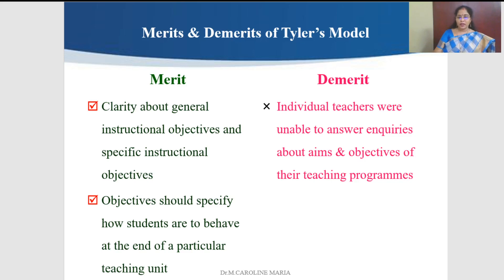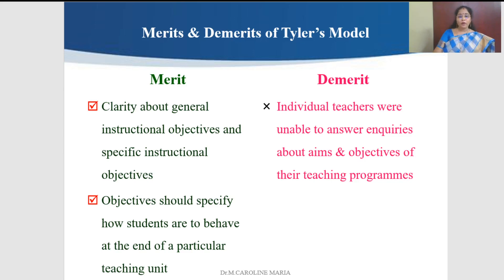Regarding the merits and demerits of Tyler's model: the merit is that it provides clarity about general and specific instructional objectives. If the teacher undergoes the rigorous process of identifying these objectives, the teacher will have clarity. The objectives should also specify how students are expected to behave at the end of a particular unit — that is the learning outcome. A demerit is that if teachers have not properly gone through the process of identifying general and specific instructional objectives, they won't be able to answer questions about the aims and objectives of their teaching program and may have confusion between the two types of objectives.